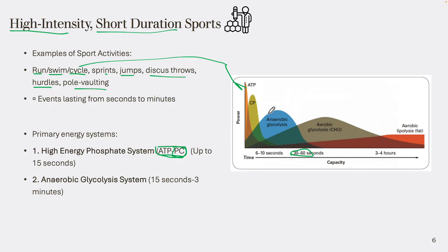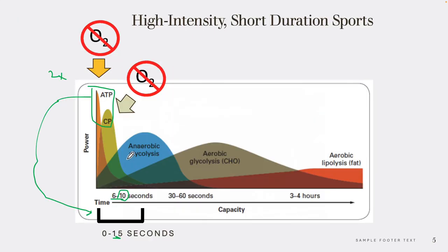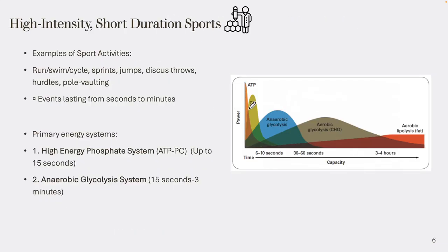The second system — anaerobic glycolysis — comes to the rescue once we burn out the ATP-PC system. We call this metabolic flexibility: as we go through different pathways, the body can shift to a new pathway to keep making ATP. We burn out free ATP, shift into creatine phosphate, then after about 10 seconds shift into anaerobic glycolysis, then aerobic glycolysis, then the fatty acid or aerobic system.